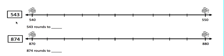So the first number we want to round is 543. First I need to think in my mind, because I'm rounding to the nearest 10, I need to think which two 10s is 543 in between.